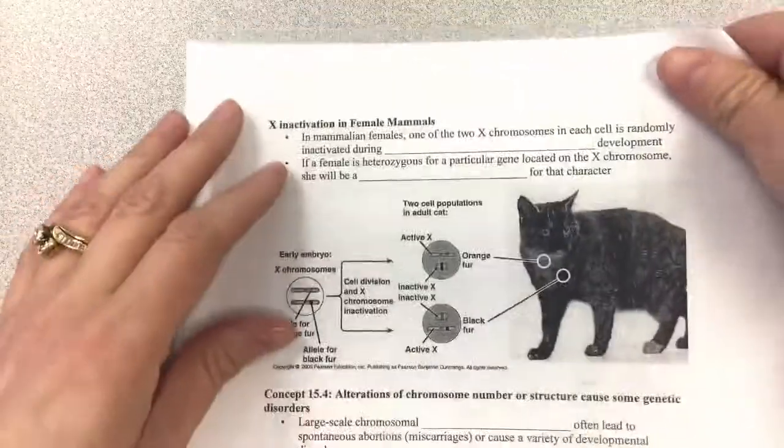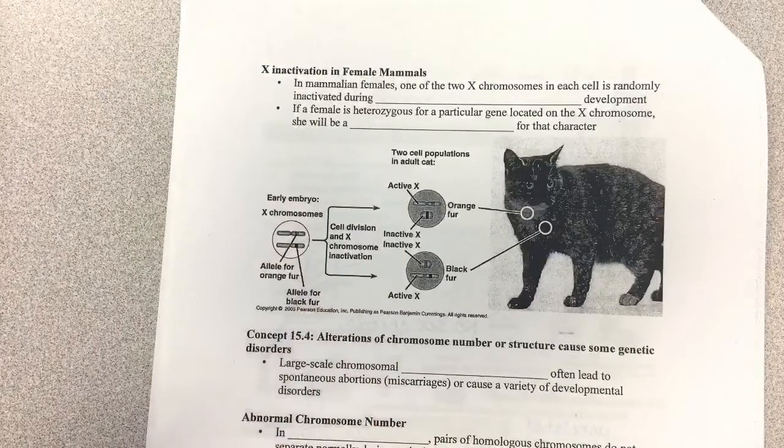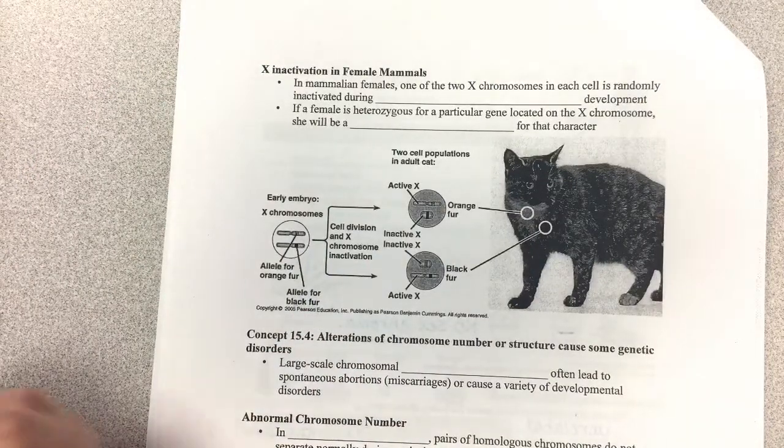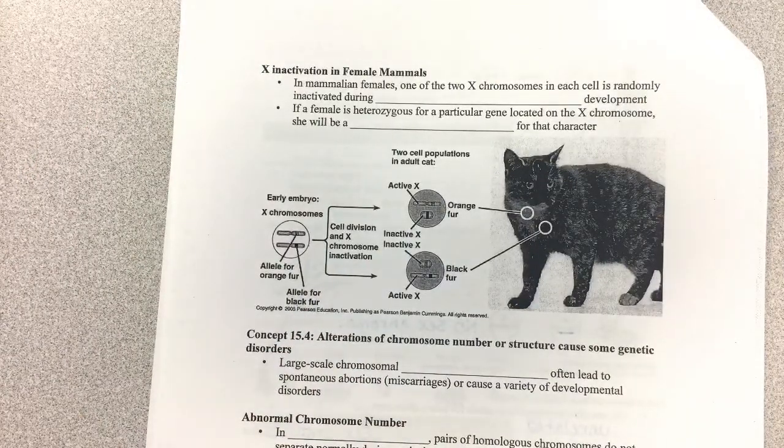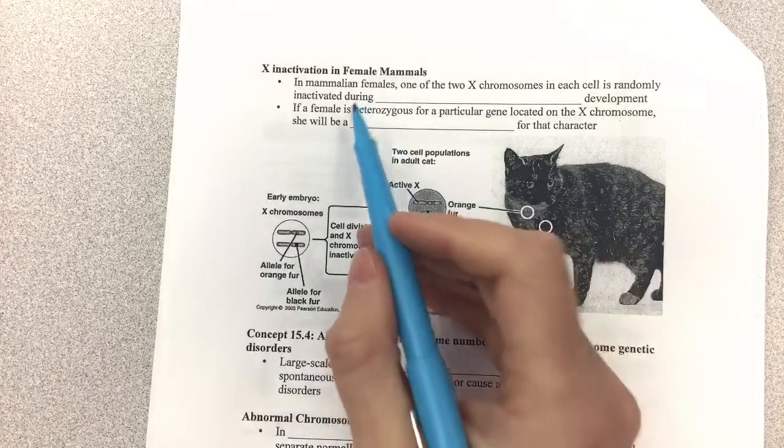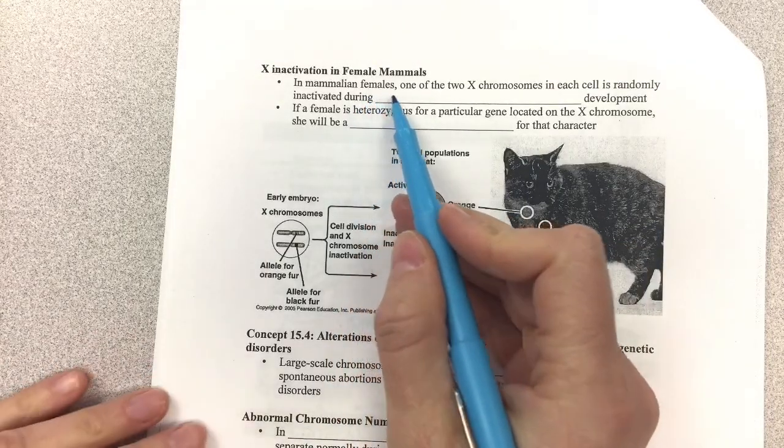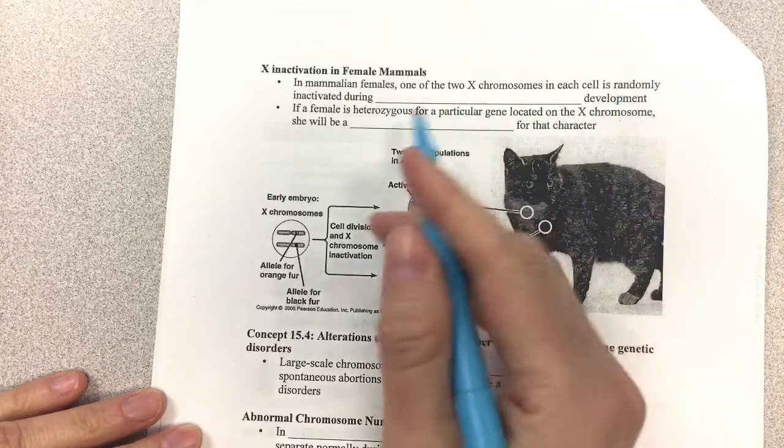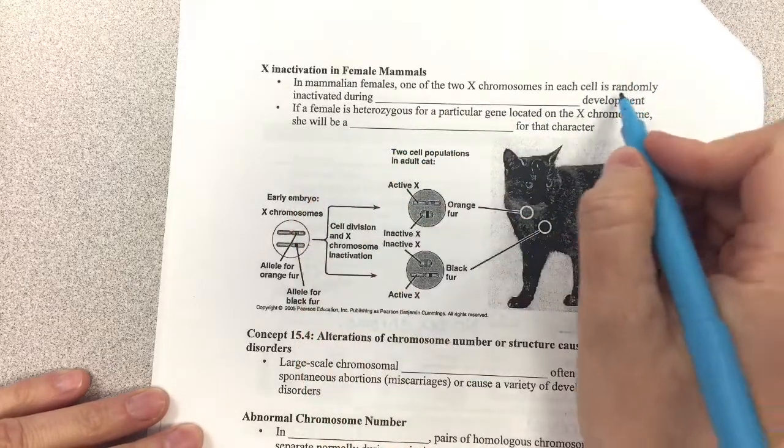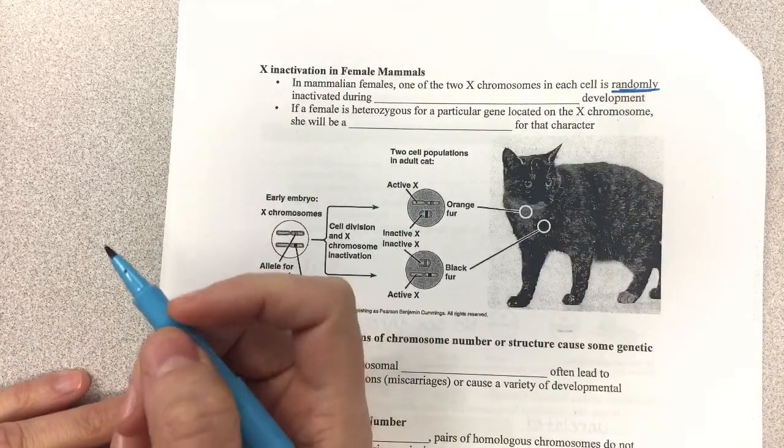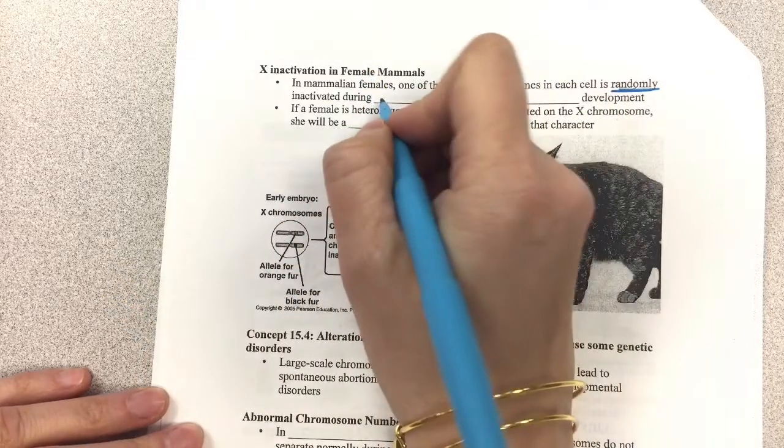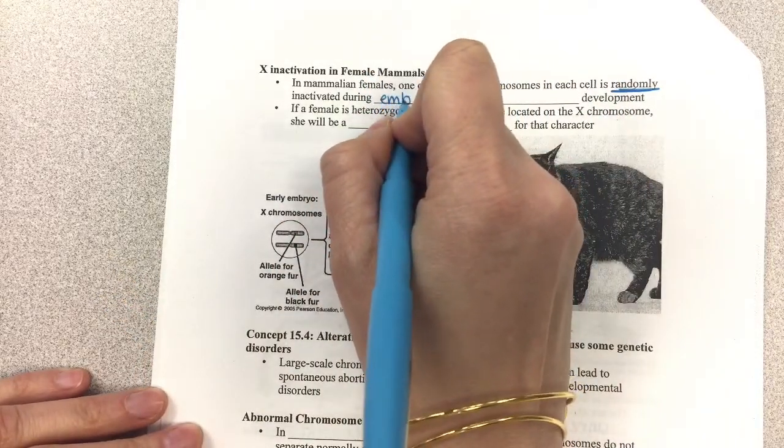So we're going to finish up this third section here and look at X-inactivation in female mammals. In mammalian females, one of the two X chromosomes in each cell is randomly - there's no rhyme or reason to it - inactivated sometime during embryonic development.